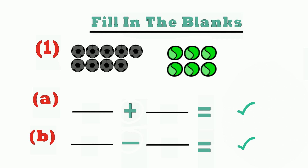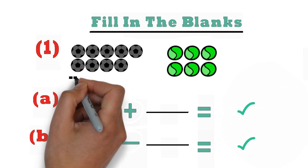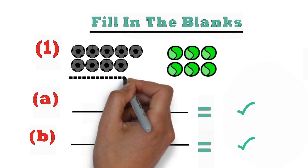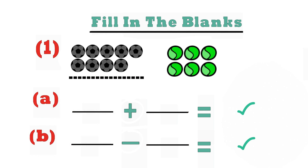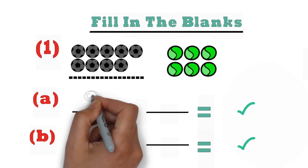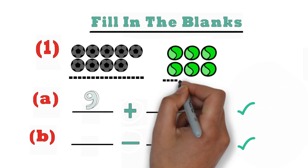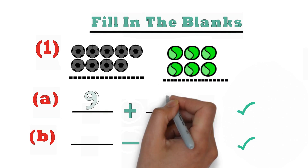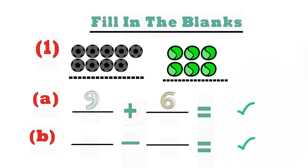So when you count these balls, we've got 1, 2, 3, 4, 5, 6, 7, 8, 9 — so we have about 9 basketballs. And we've got 1, 2, 3, 4, 5, 6 — we've got 6 tennis balls. So I'm going to put them separately because we've got two types of balls, so it is important for us to separate the two types and put them in two blanks.